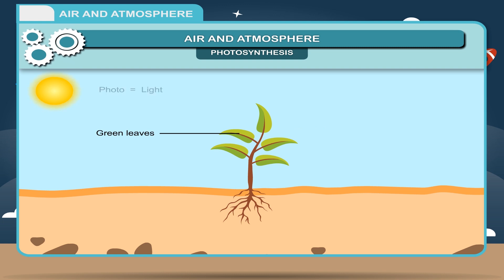To sum up, photo means light, synthesis means to make. It is a process by which plants use carbon dioxide of air, combine it with water in the presence of chlorophyll and sunlight to prepare their food and oxygen.